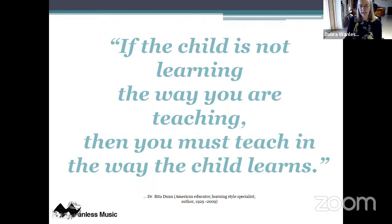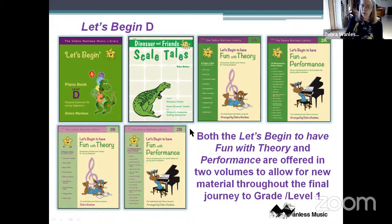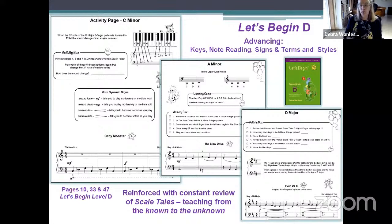If a child can't go to the piano in the usual way — if they want to sit on the floor — get on the floor and work with them. Go to what the child needs. The D level is the final level of the series. Scale Tales may be finished by this point. There are now two theory books and two performance books. The series advances in keys — C minor without a key signature, D major with a key signature, and adding A minor with G sharp.